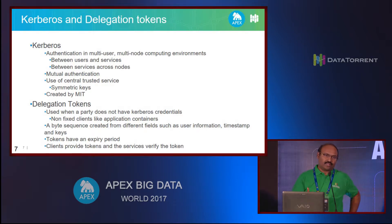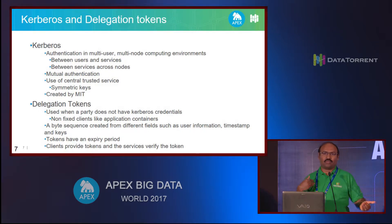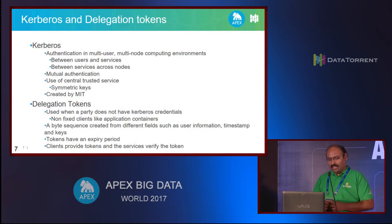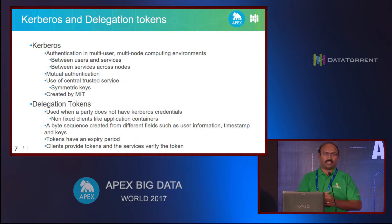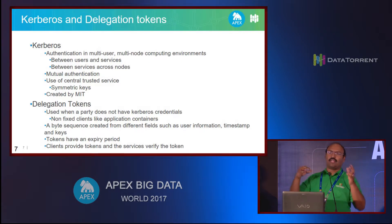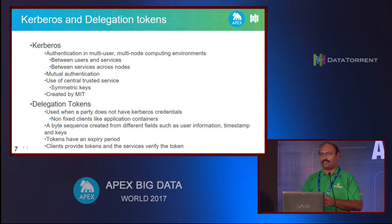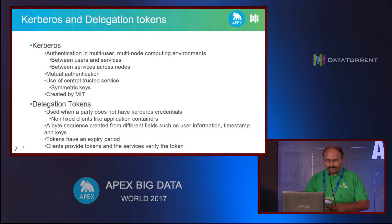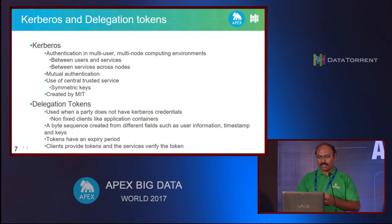However, when it comes to applications, applications can be deployed anywhere - you just launch it and it could run on any node, and you can have hundreds of applications. So it's not practical to create principals and key tabs for every application, every operator, every app master. For that reason, Hadoop supports a second mode of authentication for apps called delegation tokens. A delegation token is kind of like an OAuth token - any application that wants to talk to YARN needs to pass the token, and if the token is valid, YARN will allow access.